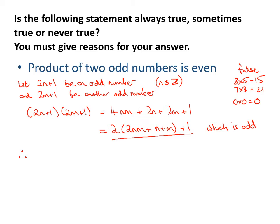Make a statement then. Therefore, product of two odd numbers is even, that statement is never true.